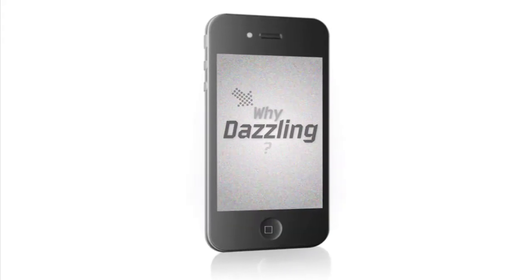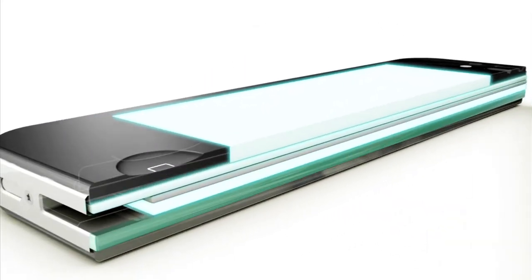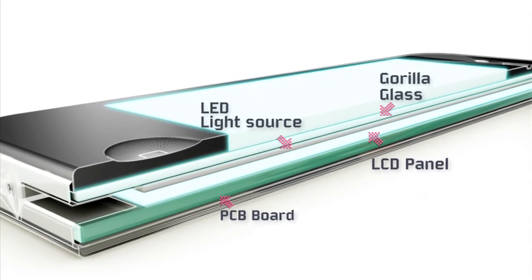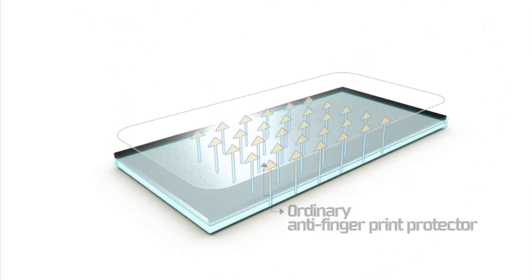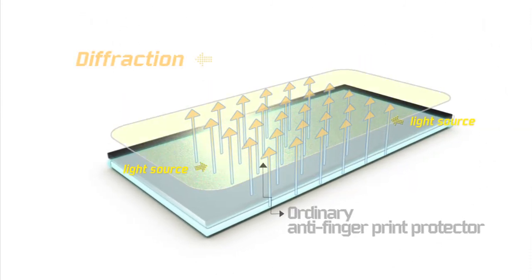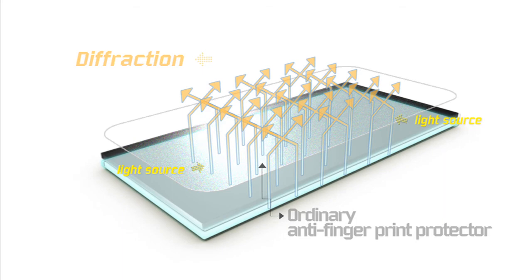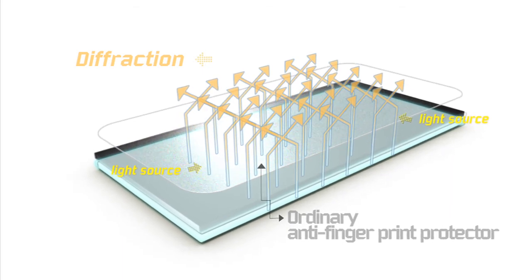Why does dazzling occur? The light from your phone display is diffracted in a chaotic manner by an ordinary anti-fingerprint protector. Diffraction breaks down the light into spectrums of colors, forming undesired pixels that affect picture quality and might strain your eyes.